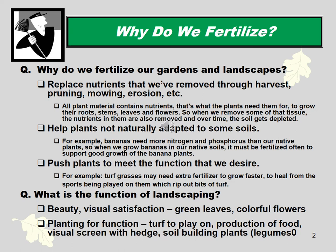Why do we fertilize at all? Shouldn't plants be able to take care of themselves, with natural cycles of leaves falling and decomposing replacing the organic matter in the soil? In human-managed landscapes, that doesn't happen. We often remove the nutrients that came from the soil through harvesting, pruning, and mowing. Erosion can also take nutrients away. Ideally you'd compost all prunings and mowings and put them back on the soil, which would almost completely close the loop — except for the food you ate that came from the plants.